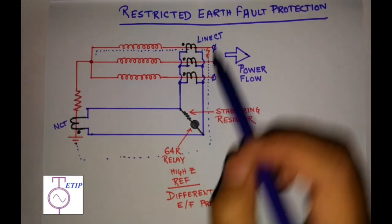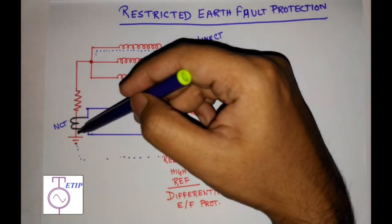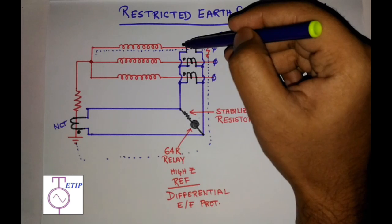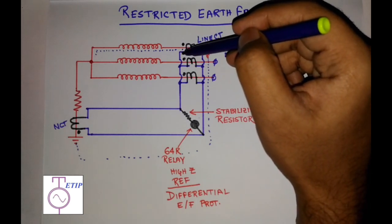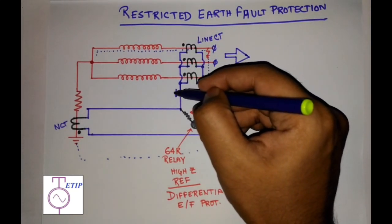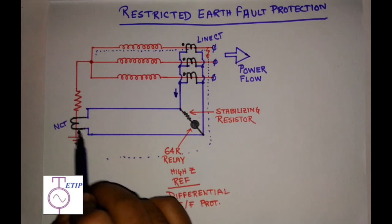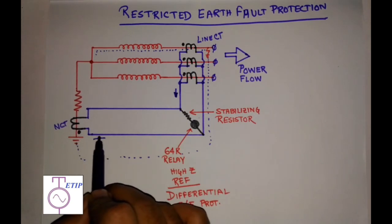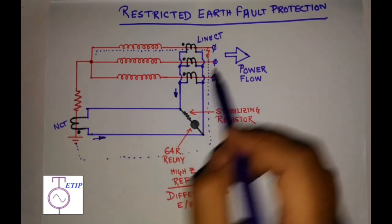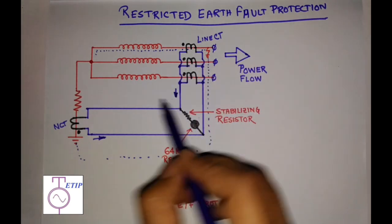Now focus on the polarity of the CT connections. For the line CT, the current is entering the CT primary through the polarity point, so the secondary current will flow in one direction. For the neutral CT, the neutral current is flowing through that point, so in the secondary the current will flow in the opposite direction. You can see that the currents are circulating through this path.